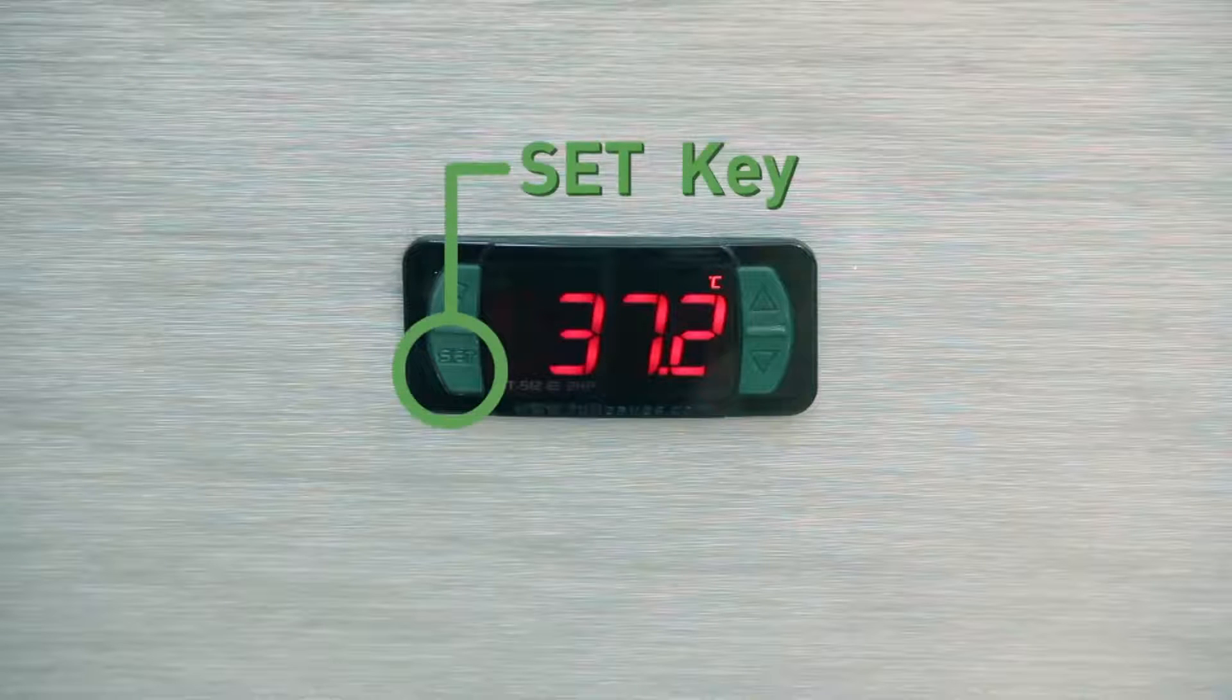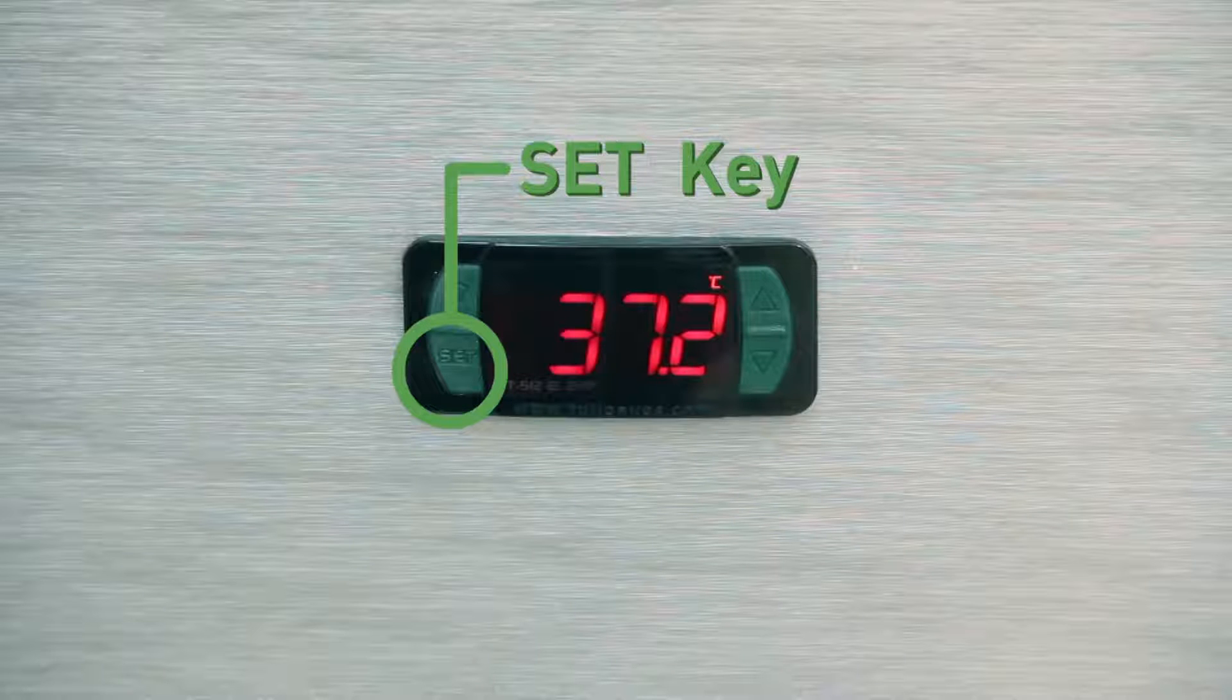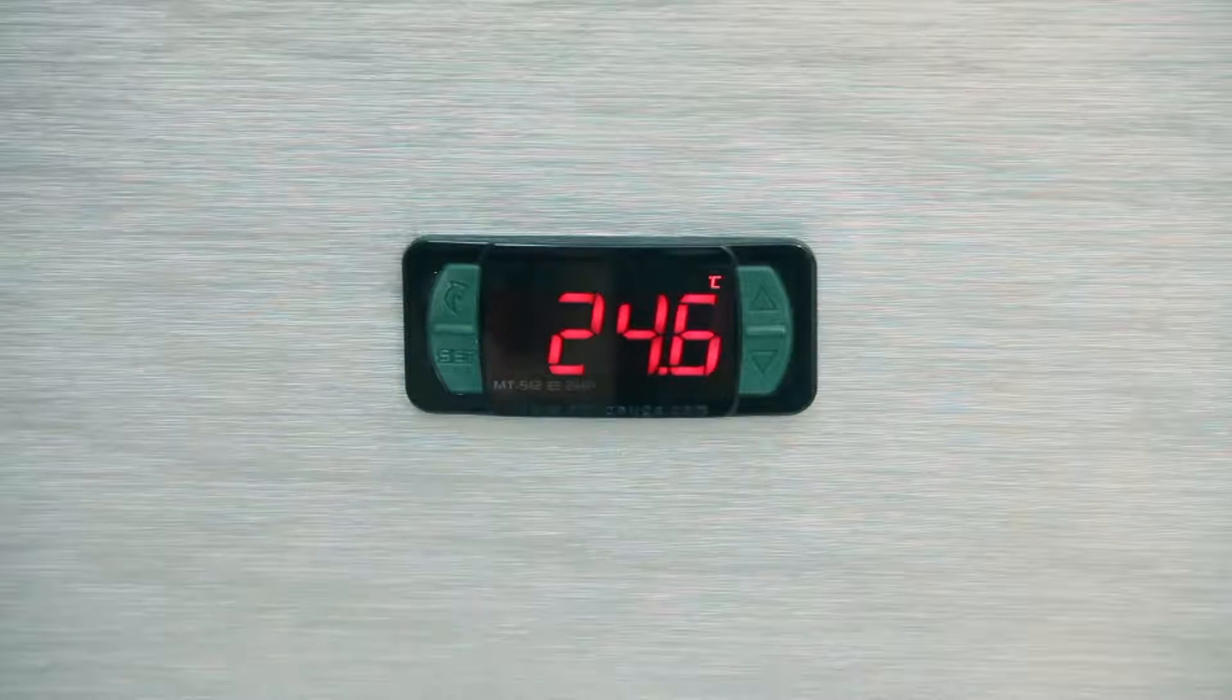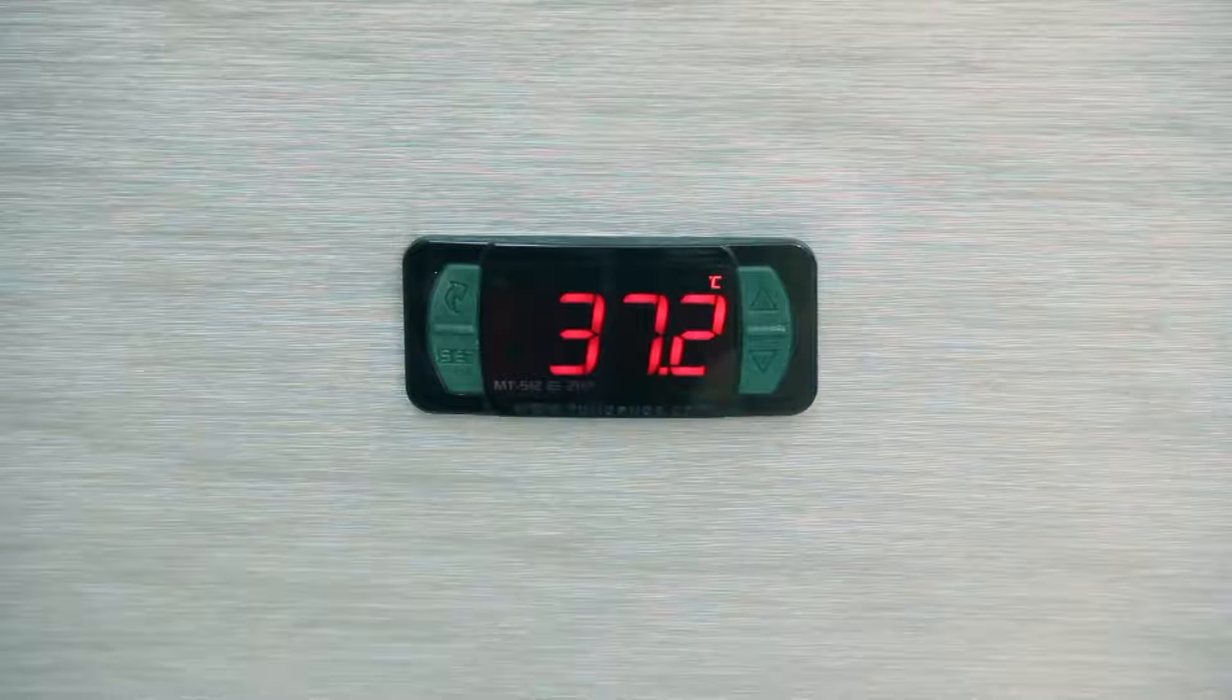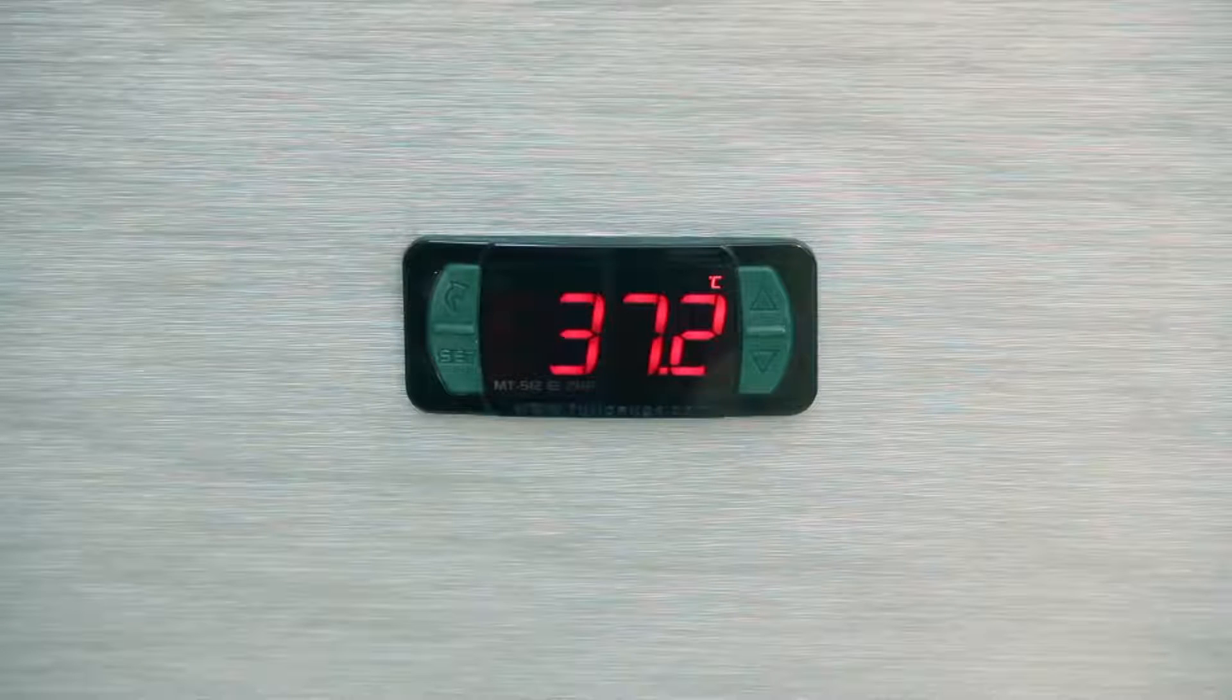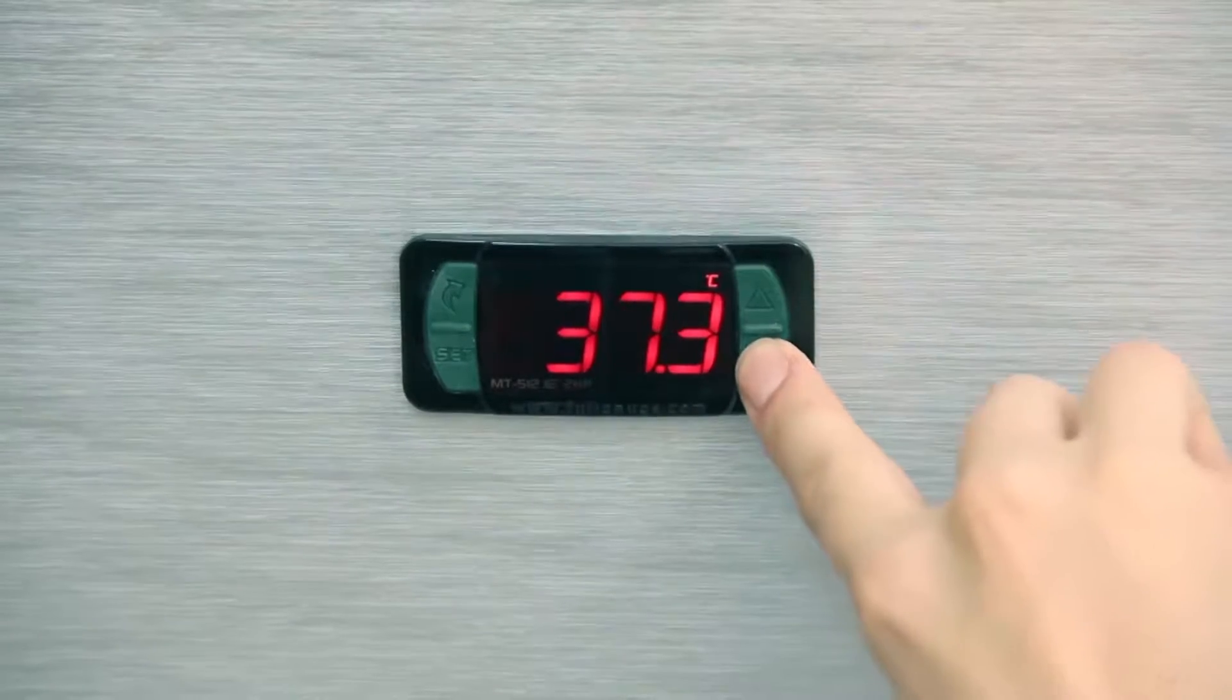Basic operations. Set point. The set point is the function we set to switch off the installation charge. The set key allows access to this function and also meets the confirmation function or enter for all controller settings. To change the set point, press set for 2 seconds until the set message appears on the display. When the key is released, the adjusted control temperature will be shown. Use the up or down keys to change the value. When you get the temperature value, press set to record it.